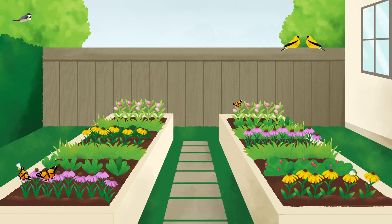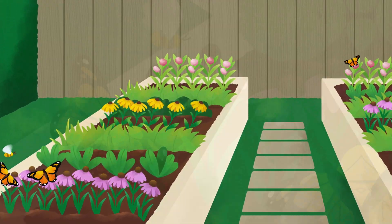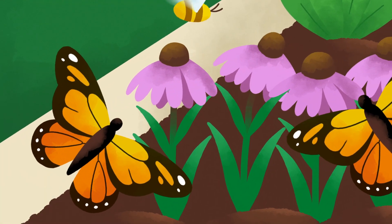As your seed garden blossoms, it becomes a vibrant habitat, attracting insects, birds, and other wildlife.